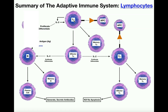The best way to think about helper T cells is that they are the generals. If you think of the ranks in the armed forces, these would be the generals — they're calling the shots. They do not directly attack anything; they just begin and coordinate the immune response against a specific pathogen.